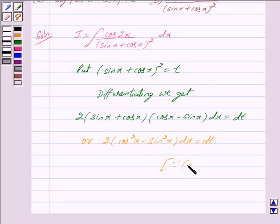Since a square minus b square equals a minus b times a plus b, we can further write this as 2 times, now we know that cos square x minus sin square x equals cos 2x.